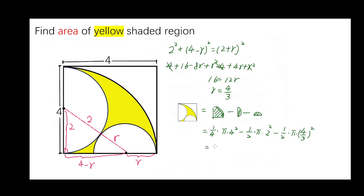That equals to 4 pi minus 2 pi minus 8 over 9 pi equals to 10 over 9 pi.